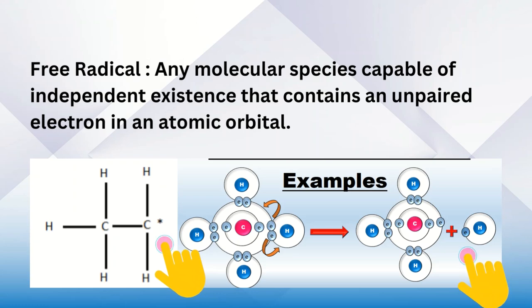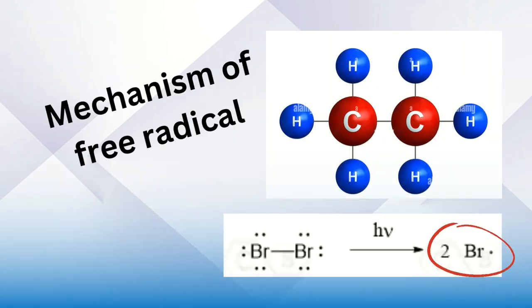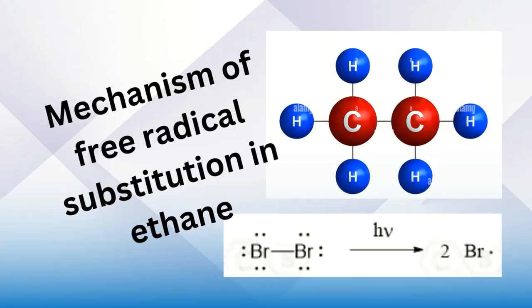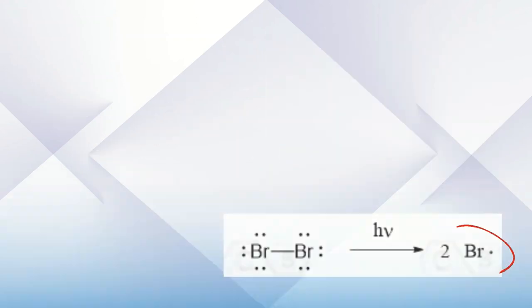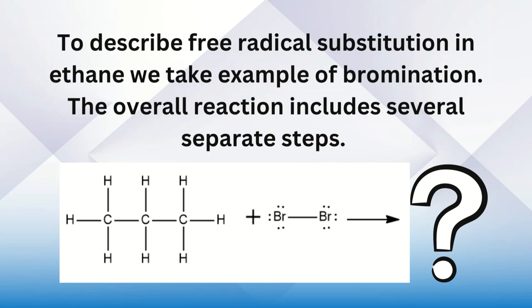independent existence that contains an unpaired electron in an atomic orbital. Now, the mechanism of free radical substitution in ethane: Before explaining the mechanism, we must understand how to describe free radical substitution in ethane. We take the example of bromination. The overall reaction includes several separate steps.